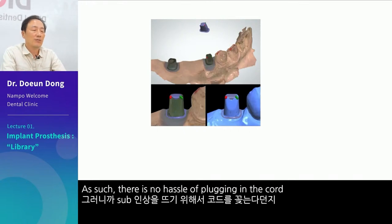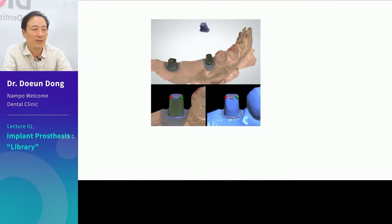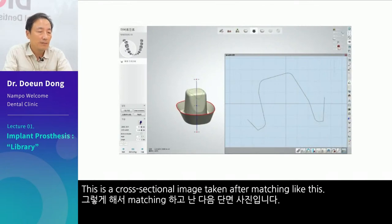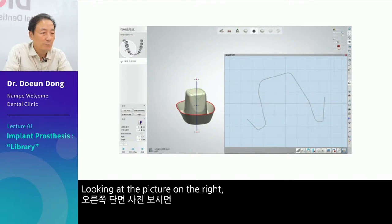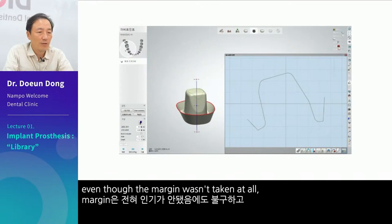As such, there is no hassle of plugging in cord to take a sub impression or having to control bleeding. This is a cross-sectional image taken after matching — looking at the picture on the right, even though the margin wasn't taken at all, it was automatically matched.